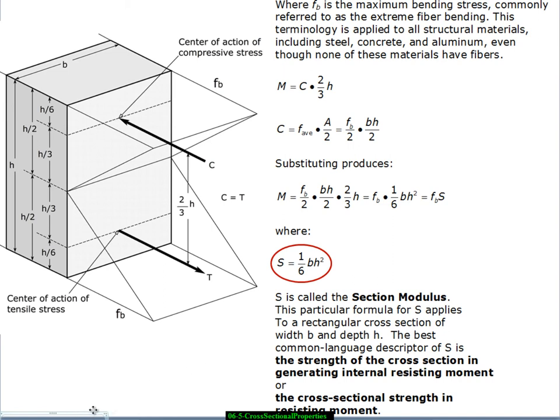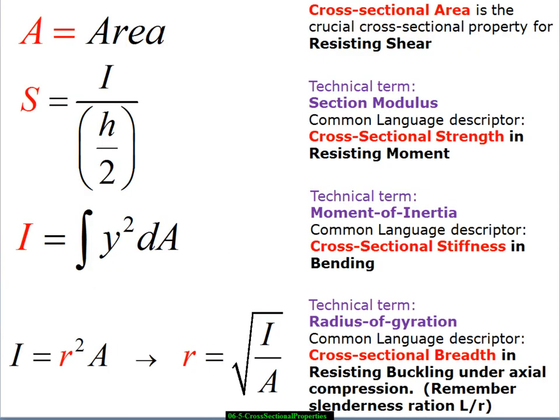So we have a little equation that I want to pull up here. M is equal to F sub B times S. S is a cross sectional property. This is a material property. And this is a moment which is imposed upon us by whatever decisions we've made about the spans and loads on our structure.